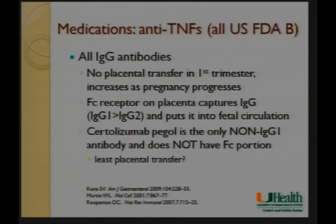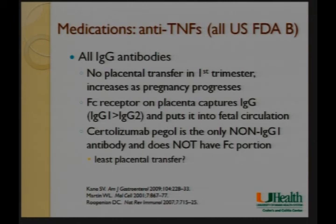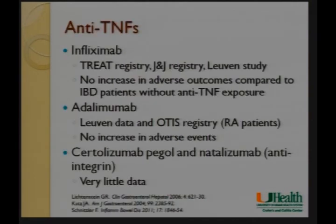The anti-TNF agents are all FDA class B — safer than thiopurines by FDA class. They are all immunoglobulin G antibodies, and IgG does not transfer across the placenta in the first trimester, but placental transfer increases towards the second and particularly the third trimester. So the earlier you can stop the anti-TNF, the less transfer across the placenta. The placenta has FC receptors that capture IgG1 more than IgG2. Infliximab and adalimumab are both IgG1 antibodies. Certolizumab pegol is the only non-IgG1 antibody — it has no FC portion, only a Fab portion — so conceptually it is probably the safest anti-TNF in pregnancy.